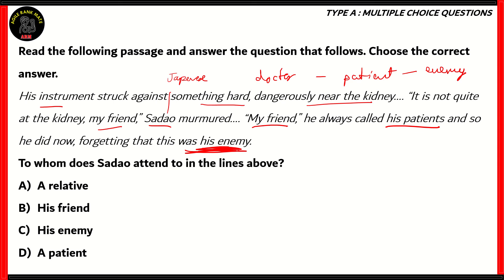We can assume all of this from this particular extract. The question is: To whom does Sadao attend to in the lines above? Is it a relative, his friend, his enemy, or a patient? Option A — we can dismiss that because nowhere in the passage is it said that it's a relative of his. The words friend, enemy, and patient are all present here, so we'll need to eliminate them based on the passage.